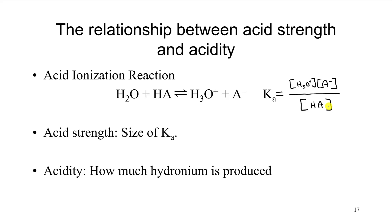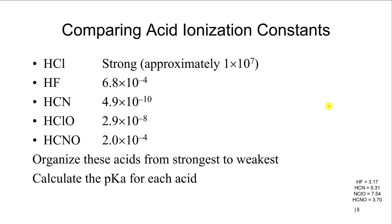Looking at Ka values for some acids: HCl has Ka of 10⁷, and HBr and HI are actually stronger. HF is a weak acid. Strong acids have very large equilibrium constants and in fact none of them are listed in the Ka tables in your book because they're all considered 100% ionized. HF, HCN, hypochlorous acid, and cyanic acid are all examples of weak acids.